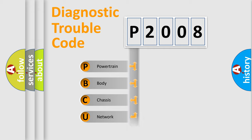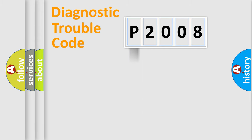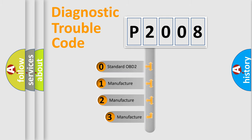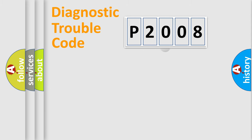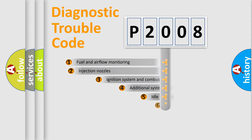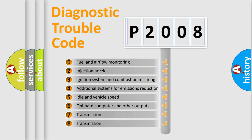Powertrain, Body, Chassis, Network. This distribution is defined in the first character code. If the second character is expressed as zero, it is a standardized error. In the case of numbers 1, 2, 3 it is a manufacturer-specific expression of the car error.